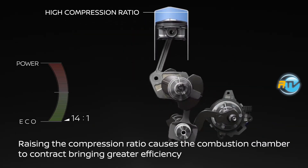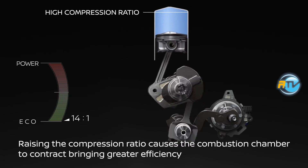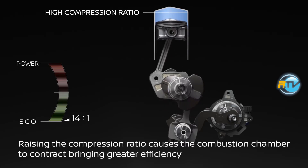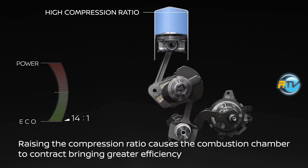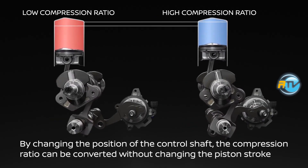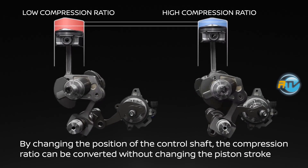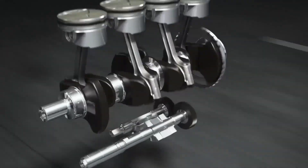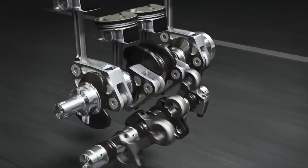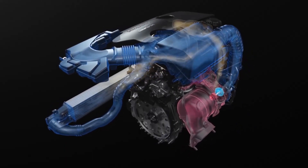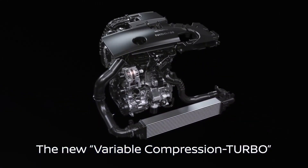By changing the position of the control shaft, the compression ratio can be converted without changing the piston stroke — keeping compression pressure high whether going full throttle or driving slowly — and the motor runs with excellent efficiency. To achieve this, they created the variable compression engine that we are seeing here, and it is quite a marvel.